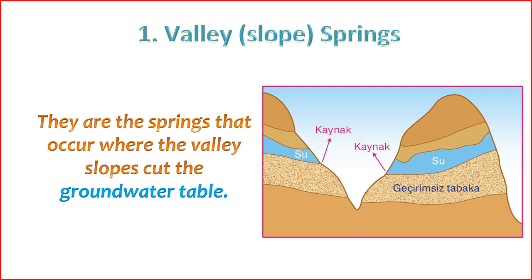6. Importance — these springs are often important water sources in hilly or mountainous regions. They can contribute to the formation of small streams or rivulets as the spring water collects and flows downhill. 7. Ecological Significance — valley slope springs provide valuable water resources for local ecosystems. The water emerging from these springs can support plant and animal life, contributing to biodiversity in the surrounding areas.